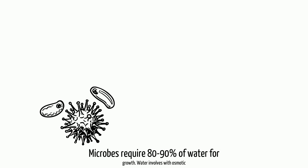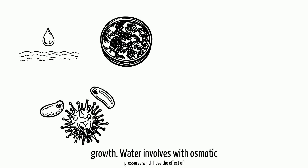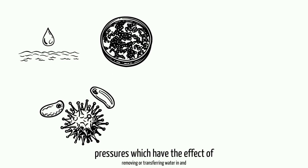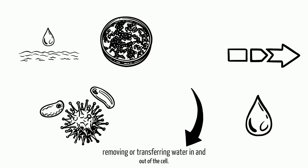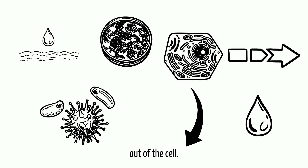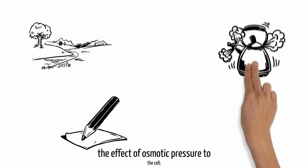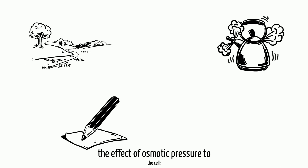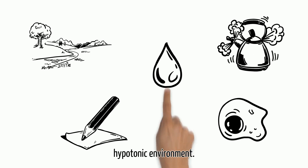Microbes require 80–90% water for growth. Water is involved with osmotic pressure, which has the effect of removing or transferring water in and out of the cell. There are three environments used to describe the effect of osmotic pressure on the cell: hypertonic, isotonic, and hypotonic.